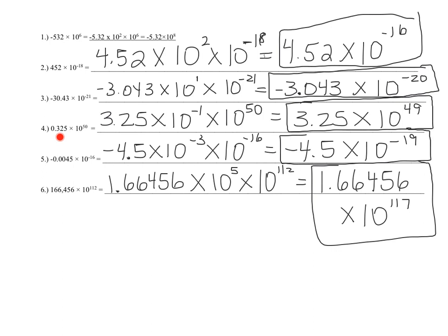For small numbers, which have negative exponents, the exponent is going to get smaller when you make a small number bigger. When you make a small number bigger, the exponent goes down. In number 4, you're adding negative 1 to 50, essentially subtracting 1. For the next, moving the decimal point three places gives a negative 3 exponent, so you're adding negative 3 to negative 16, or subtracting 3 from negative 16. Adding a negative is the same as subtracting a positive.